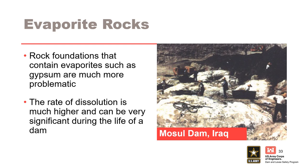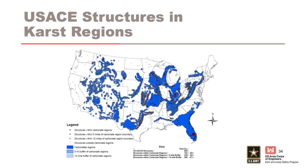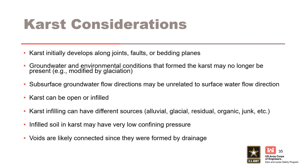Rock foundations that consist of evaporite rocks like gypsum are potentially more problematic than limestone due to the rate of dissolution. Mosul Dam in Iraq is a good example where grouting has been ongoing since its completion to treat continuous deterioration of the foundation. About 25% of all Corps of Engineers structures are in mapped carbonate regions. Karst initially develops along joints, faults, or bedding planes. Groundwater and environmental conditions that formed the karst may no longer be present — for instance, they could be modified by glaciers. Subsurface water flow directions may be unrelated to the surface water flow direction. Karst can be open or infilled, with infilling from alluvial soils, glacial soils, residual soils, organic material, or even junk. Infilled soil in karst may have very low confining pressure. Voids are likely connected since they were formed by drainage.